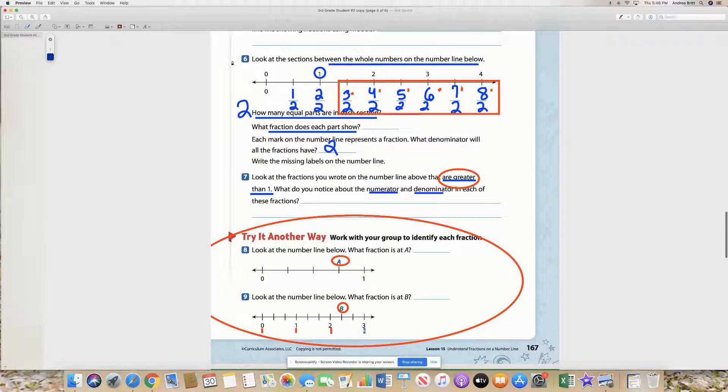Think about what we just did for this number six, because we had whole numbers all the way up to a whole number of four. So think about what we did, because you're not going to be counting all of these. It's not going to be one, two, three, four, five, six, seven, eight, nine.